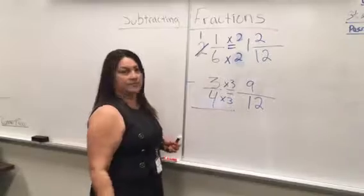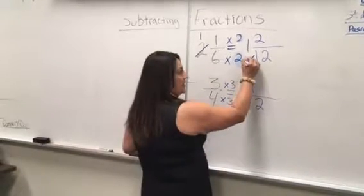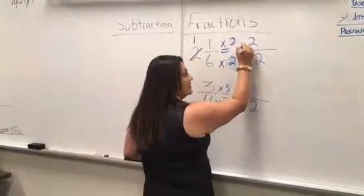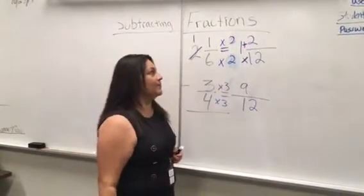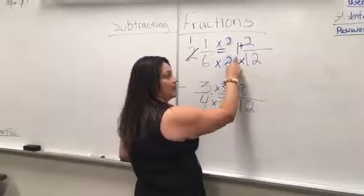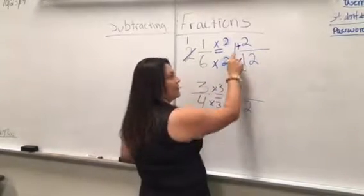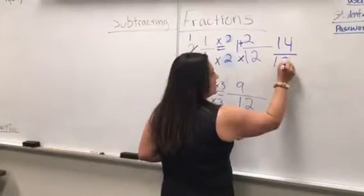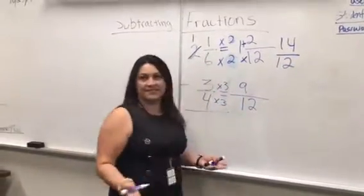Now multiply the denominator by the borrowed whole number, then add the numerator. 12 times 1 is 12, plus 2 equals 14. Keep the same denominator of 12, so the new fraction is 14/12.